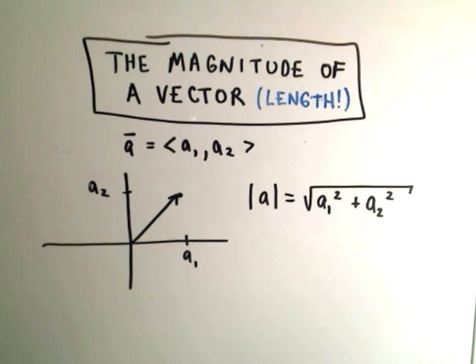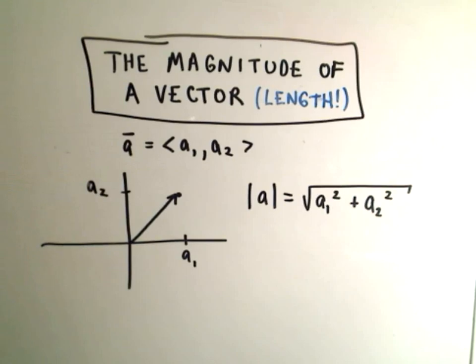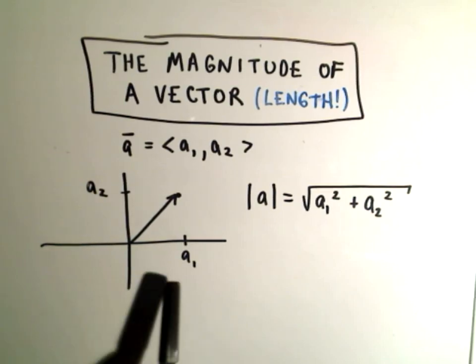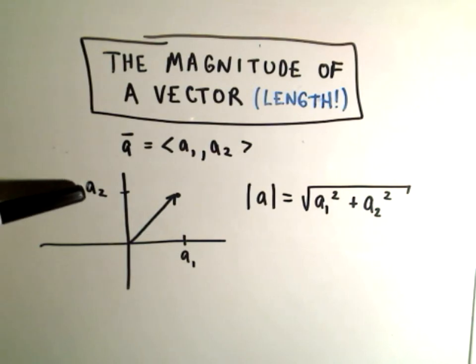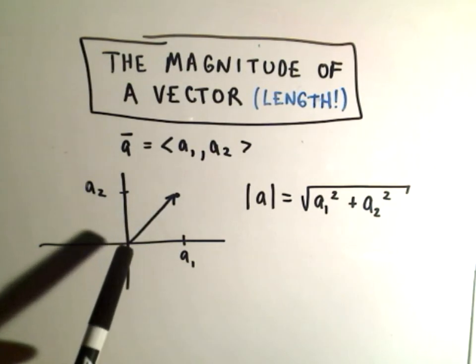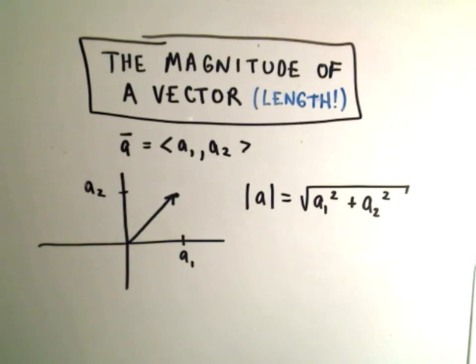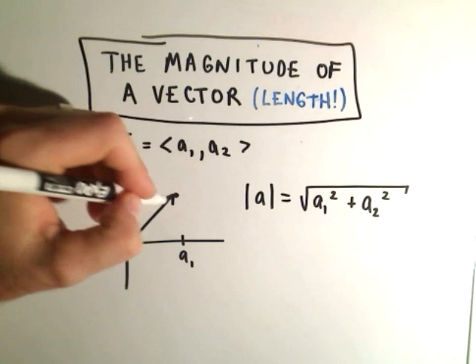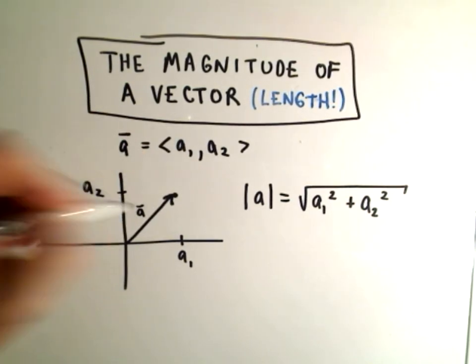In this video, I want to talk about the magnitude or length of a vector. Suppose vector A has components A1 and A2. All that means is if you find the x-coordinate of A1 and the y-coordinate of A2 and put a dot there, then start the vector at the origin and make it stop at that point, that's what the vector looks like. So this is the vector A1.